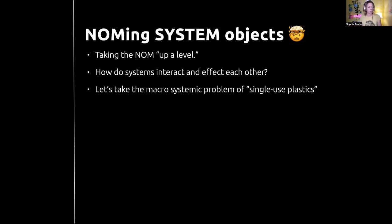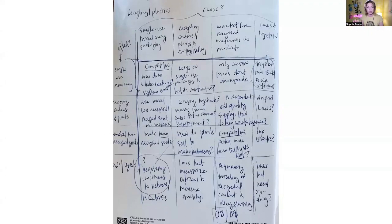I wrote a newsletter on this — OAUX.com/newsletter. Let's take a macro system of single-use plastics. I did a 25-minute brainstorm thinking about what are the systems inside or contributing to that problem: throwaway culture, recycling collection processes, the recycled materials market, laws and legislation — and many more.